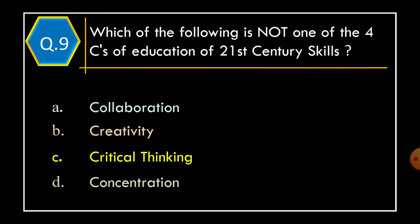Question 9: Which of the following is not one of the four C's of 21st century education skills? Option A: Collaboration. Option B: Creativity. Option C: Critical Thinking. Option D: Concentration. And the correct option is Option D: Concentration.